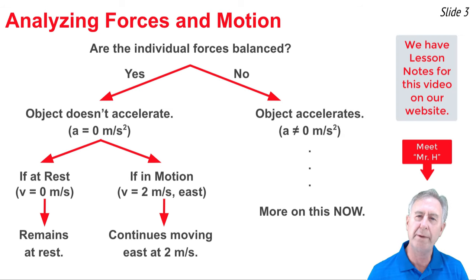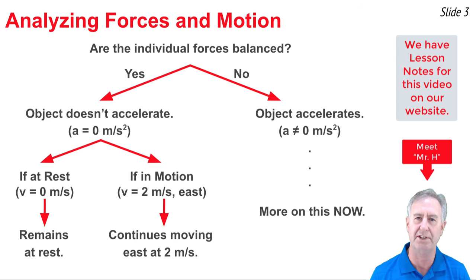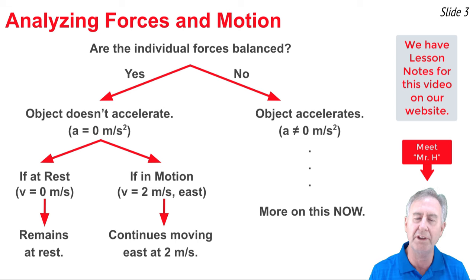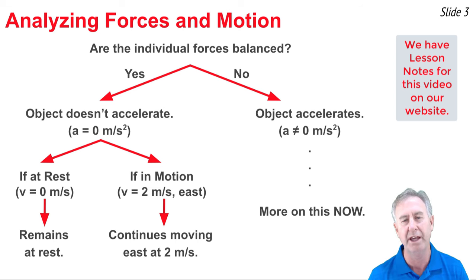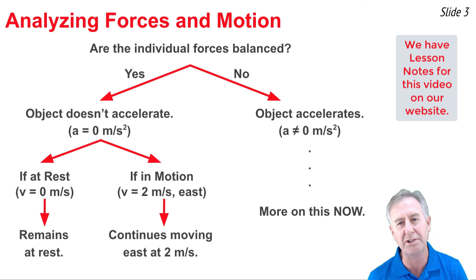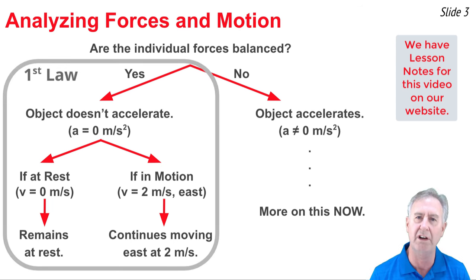Newton's Laws are all about the relationship between force and the subsequent motion. One of the most central questions you always ask is: are the individual forces that act upon the object balanced? And if the answer is yes — the forces balance each other out — then you can be certain that the object will not accelerate. If the object is at rest, it stays at rest; if it keeps moving with the same speed in the same direction, that's Newton's First Law of motion.